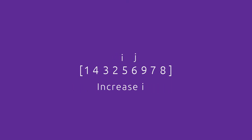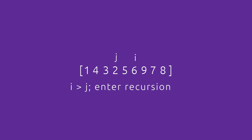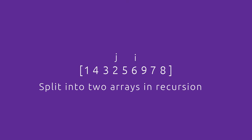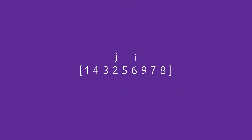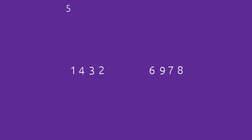We increase i again and decrease j until they're at the same index. Increasing i and decreasing j further, we end up with j less than i. In the code, when this happens we must go into recursion. We split the array into two parts: one part is [1, 4, 3, 2] and the other is [6, 9, 7, 8], ignoring the five since it's already in its sorted position.